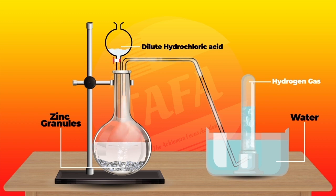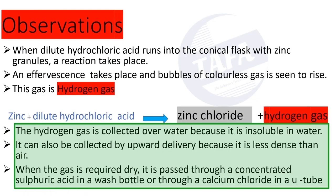acid to give zinc chloride, which is a salt, and hydrogen gas. The hydrogen gas is collected over water because it is insoluble in water. It can also